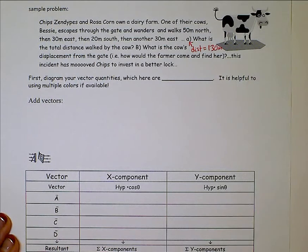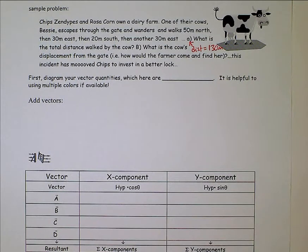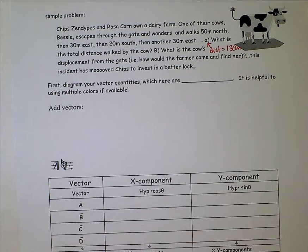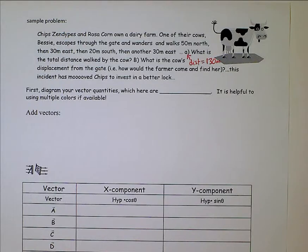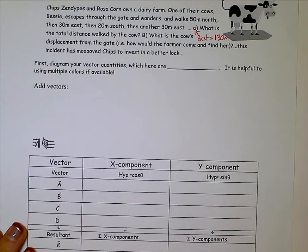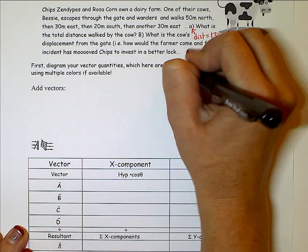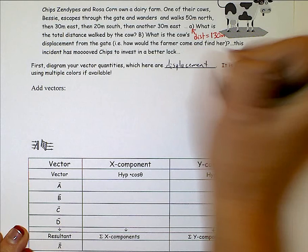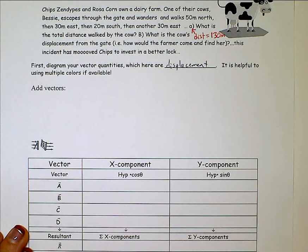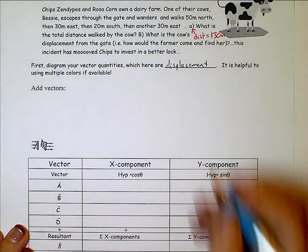Now for the more fun part, let's actually find the resultant displacement. These are displacement vectors. You can add any kind of vectors. This just happens to be a displacement. I'm going to use colors just to make this a little bit easier. So 50 north, that's going to be A.